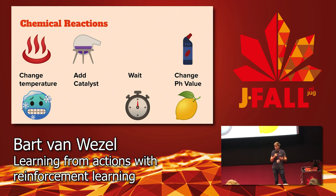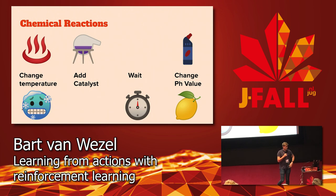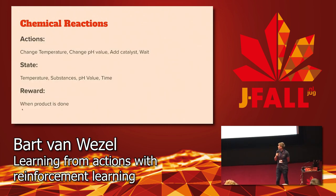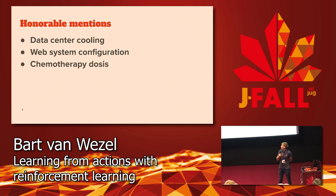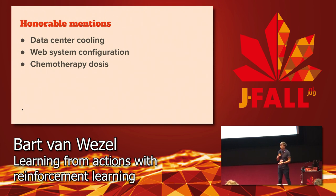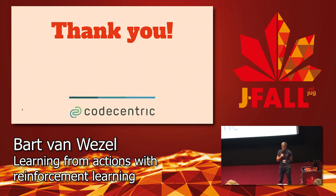Netflix also uses reinforcement learning to determine movie artwork — if you watch a lot of comedies, they'll show artwork with a romantic scene. It's also used in chemical reactions: multiple chip sensors are brought together to trigger a reaction. The actions are changing temperature, catalyst, chip distance, or waiting; the state includes current temperature, substances, and pH value. The reward is higher when fewer actions were needed. Honorable mentions include cooling systems, where a negative reward is applied when room temperature rises. If you have questions, meet me at the Code-Centric booth.